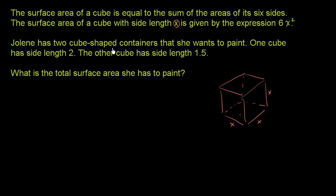Jolene has two cube-shaped containers that she wants to paint. One cube has side length 2. So this is one cube right over here. Let me do my best to draw it. So this right over here has side length 2. So that's its dimensions.